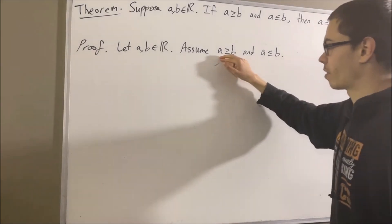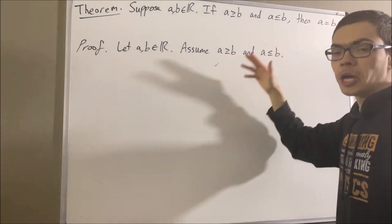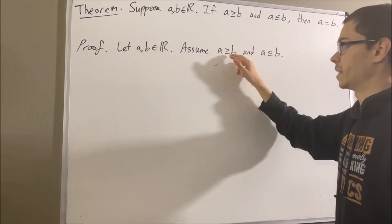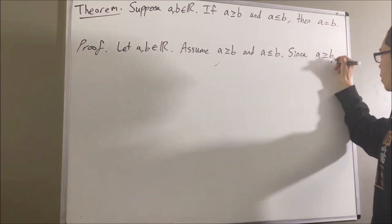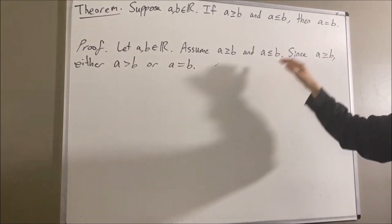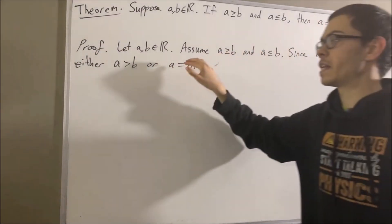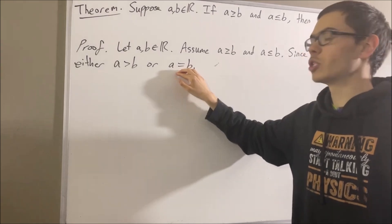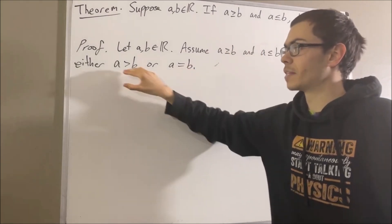Since A is greater than or equal to B, this means that either A is greater than B or A is equal to B. Our goal is to prove that A equals B, and so what we're going to do is eliminate the possibility that A is greater than B.